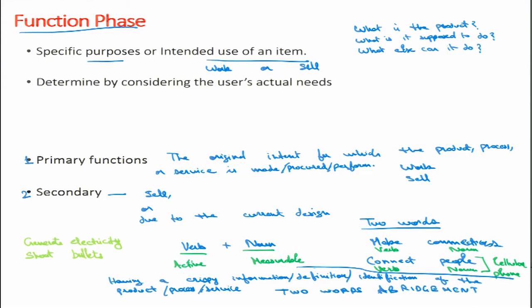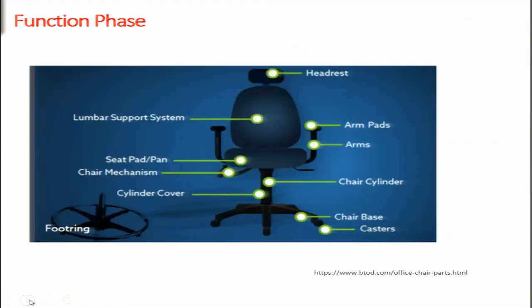The advantages of two-word abridgment are: it focuses on function rather than on the item, it encourages creativity, and it frees the mind from specific configurations. Looking at a picture of a chair, different parts of the chair have different functions to be accomplished.